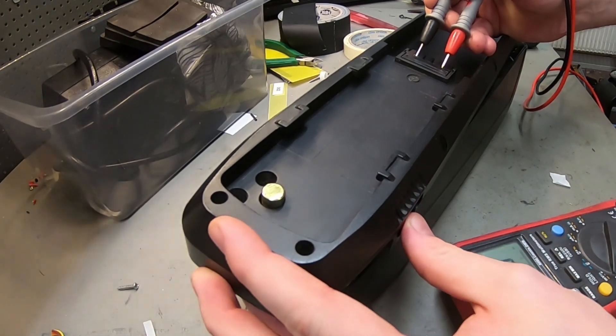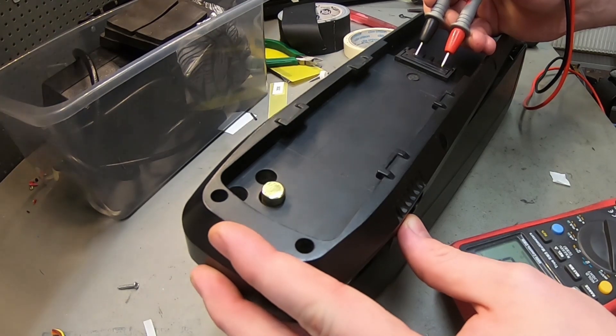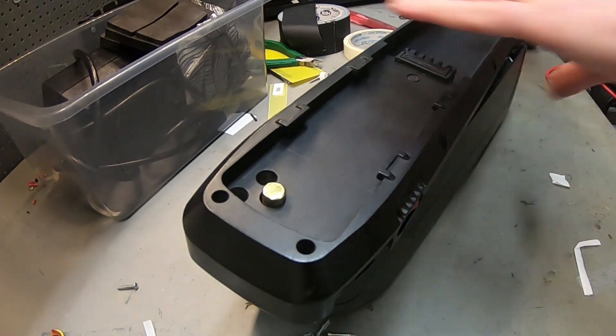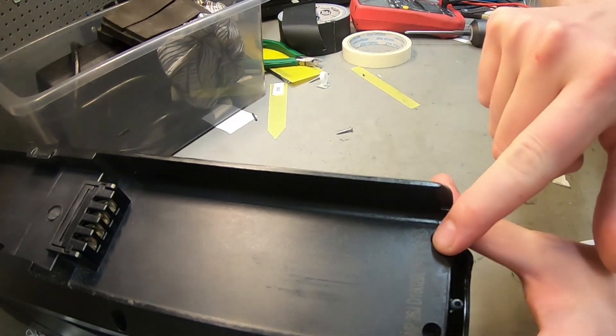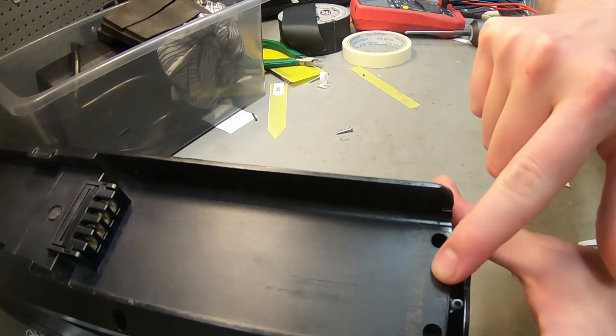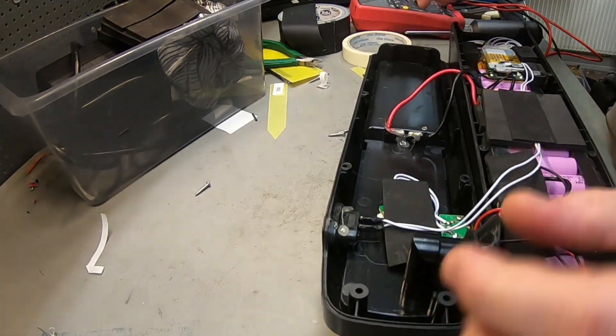Yeah, it's 5.4 volts. That's kind of low for an e-bike battery, especially if it's 46 volts. Here we actually have a label: 48 volt, 10.4 amp hours, 2018. So I believe we have a dead battery or maybe something else.